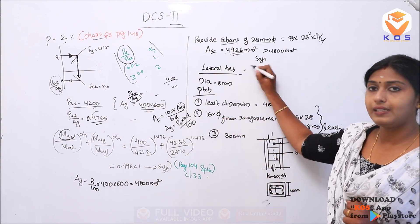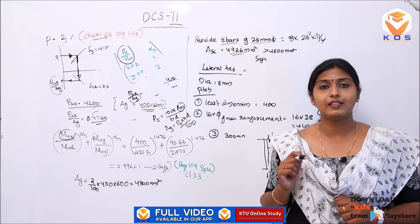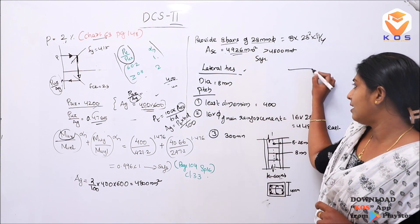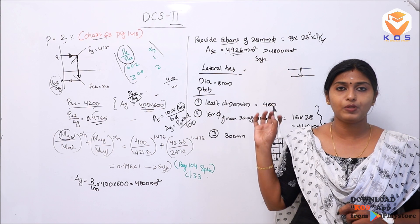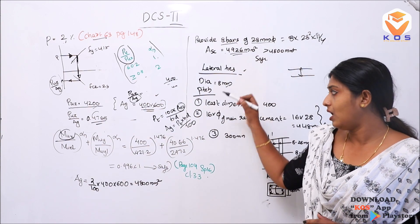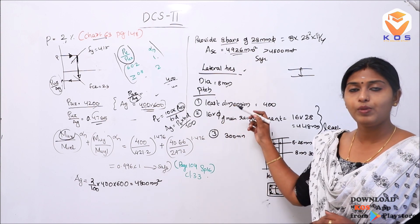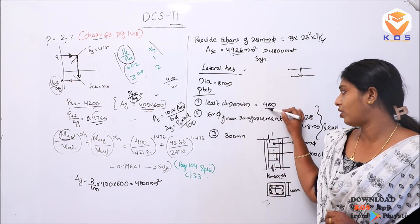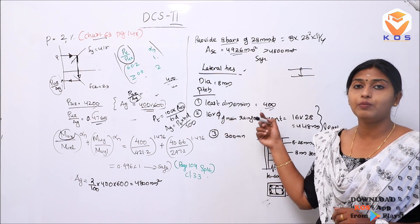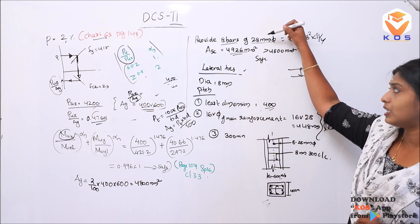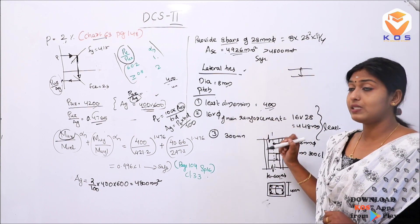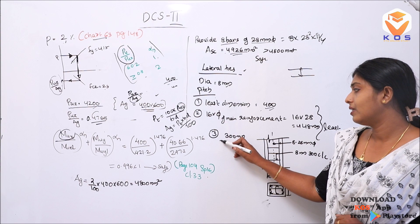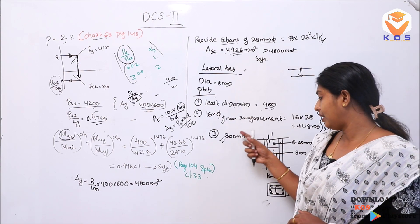For lateral ties design, we determine the diameter and spacing. The minimum value is taken as the least of: the least lateral dimension of the column, 16 times the diameter of main reinforcement (16 × 25 = 400 mm), and 300 mm. Looking at the cross-section, main reinforcement reaches the lateral ties. Lateral ties of 8 mm diameter are provided at a spacing of 300 mm.